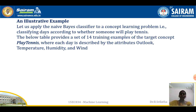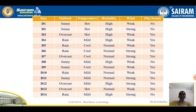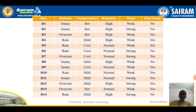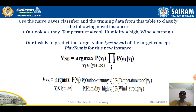We consider four attributes: the first is Outlook, the second is Temperature, the third is Humidity, and the fourth is Wind. This is the same example from Module 1 on concept learning. The outcome is whether the person plays tennis — Yes or No. We use the Naive Bayes classifier trained on this data to classify the following novel instance: Outlook is Sunny, Temperature is Cool, Humidity is High, and Wind is Strong.